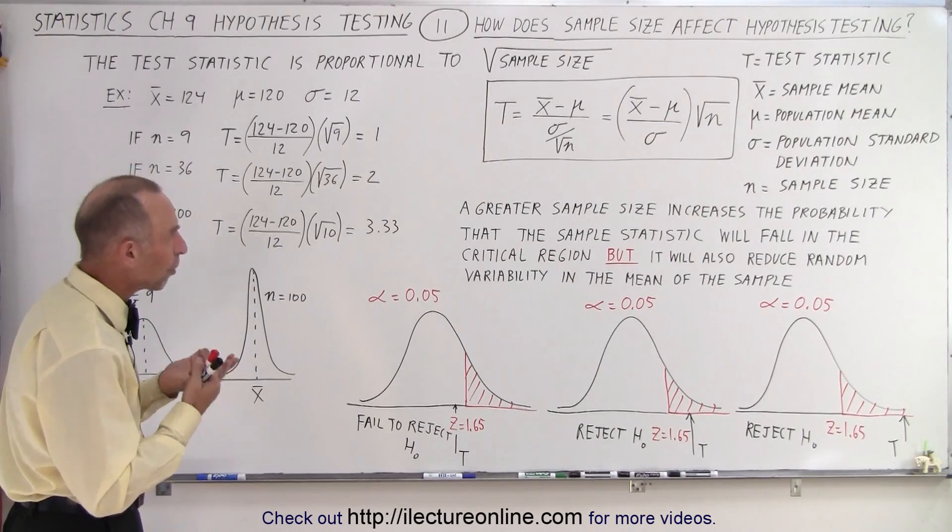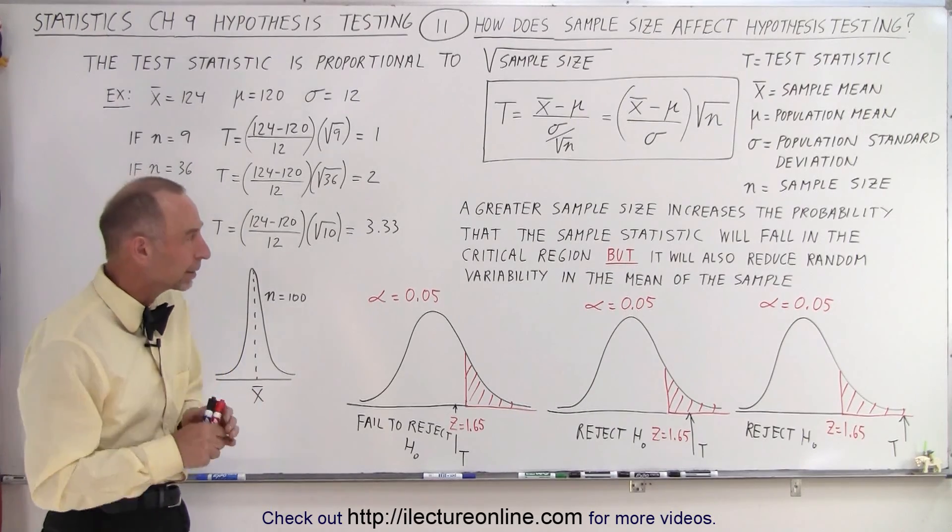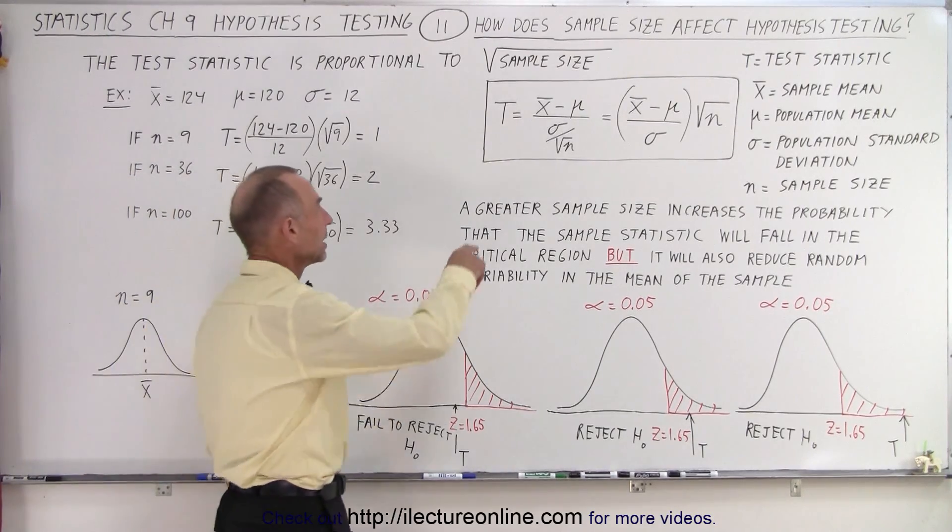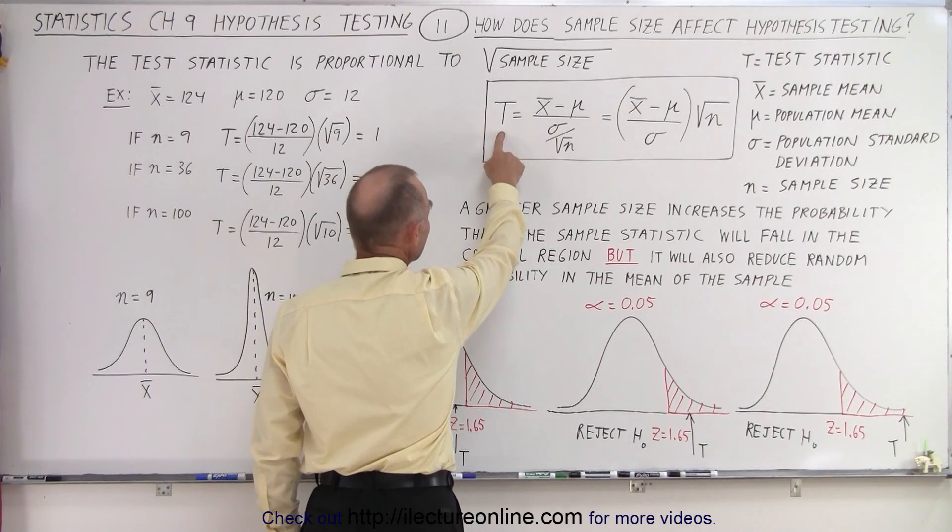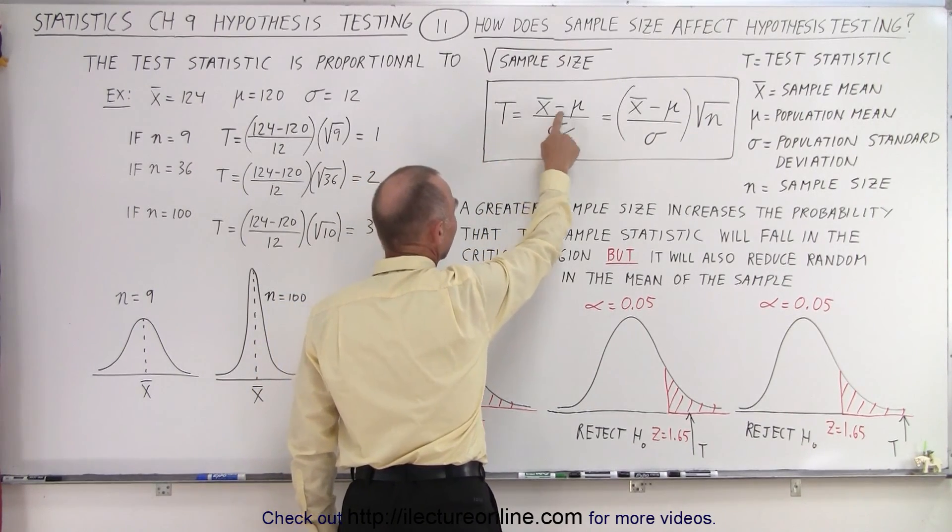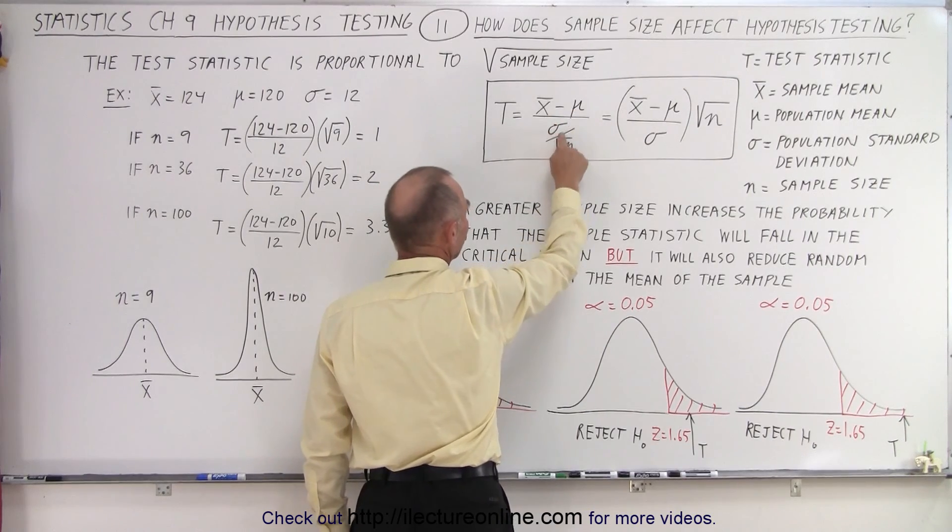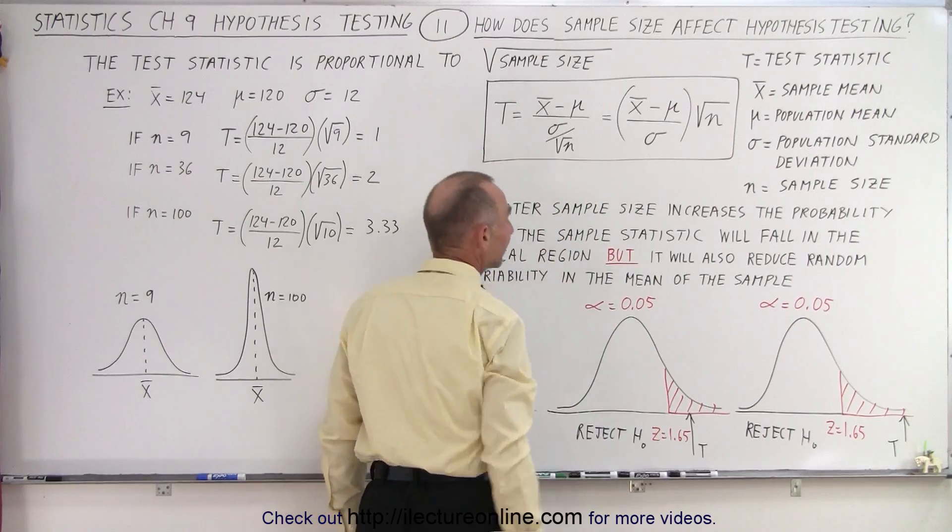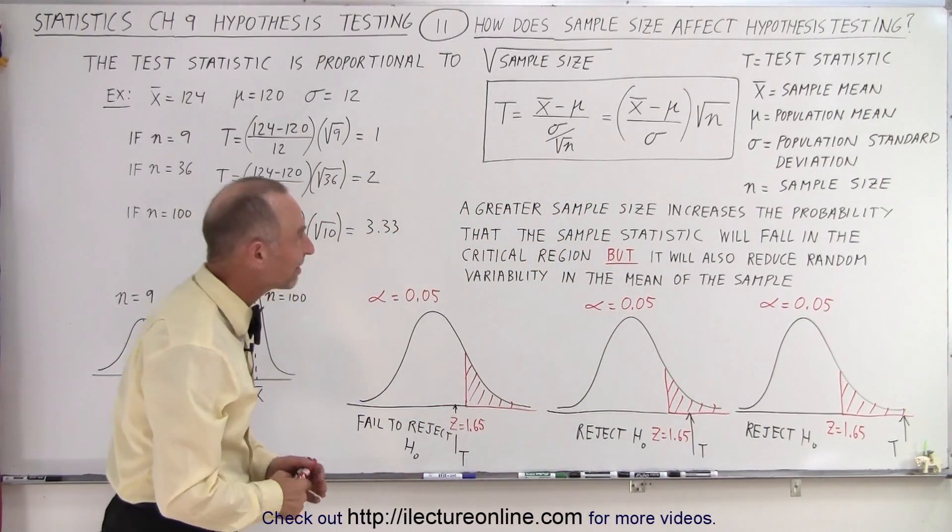Well first of all let's go back to the equation where we calculate the test statistic t which is the difference between the mean of the sample and the mean of the population divided by the standard deviation of the population, which is then divided by the square root of the sample size.